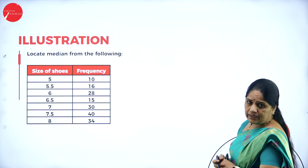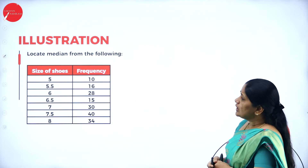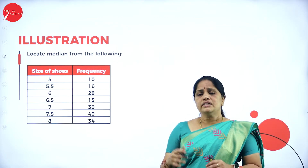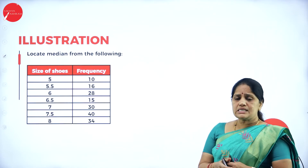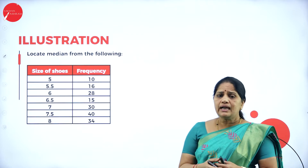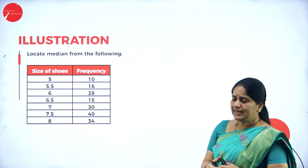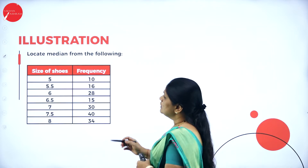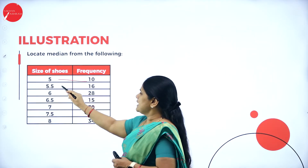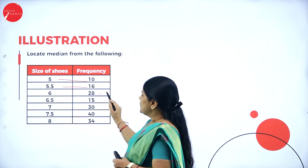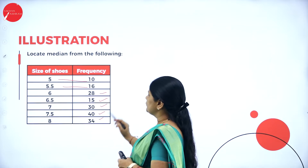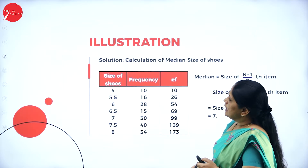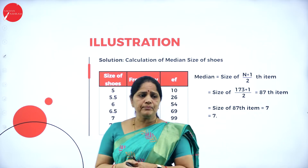Now here we have one more illustration. Locate the median from the following data. In the previous two examples, only values were given with no frequency. When only values are given, we can just rearrange and apply the formula. But when values are given along with frequency, we need a different approach. Here we have the size of shoes with their frequencies: size 5.5 has frequency 10, and so on with 16, 28, 15, 30, 40, 34.